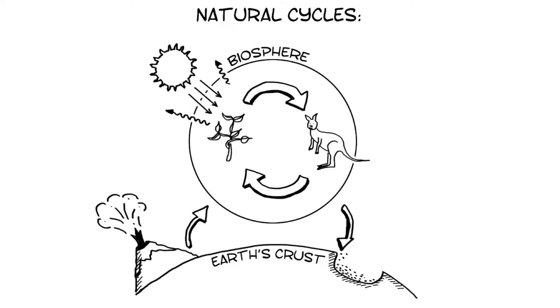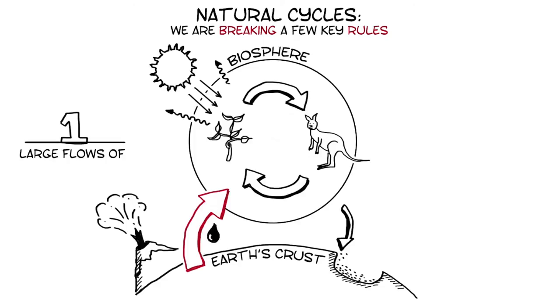So how do the ways in which we meet our needs affect this operating system? Turns out, there are a few key rules we're breaking. Firstly, we're taking substances from the Earth's crust and releasing them into our biosphere so fast that they're increasing at rates never seen before.